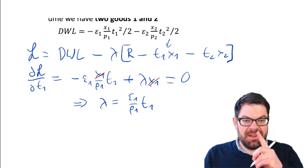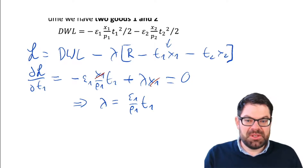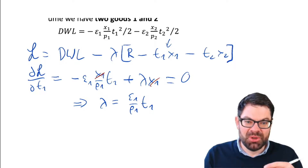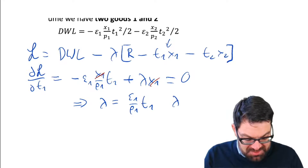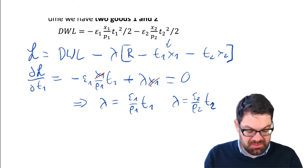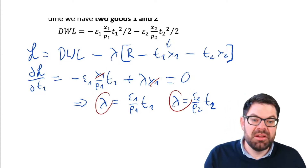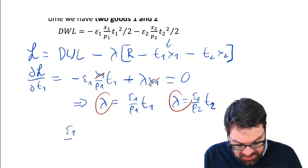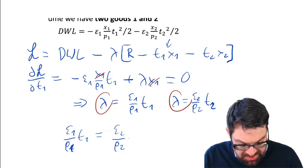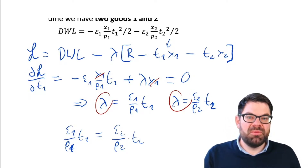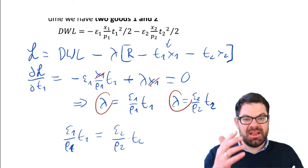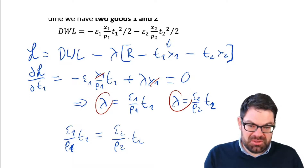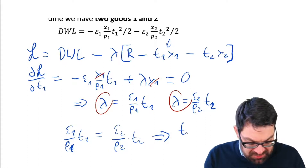The first derivative of the Lagrangian with respect to t₂ looks exactly the same. Taking a shortcut, if we do the same for t₂ we get: λ equals ε₂ divided by p₂ times t₂. Since lambda appears in both expressions, we can equate them: ε₁ divided by p₁ times t₁ equals ε₂ divided by p₂ times t₂. We then rearrange to find the optimal ratio of the two taxes.